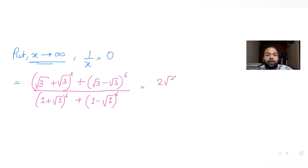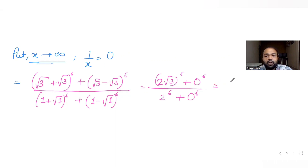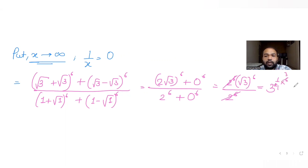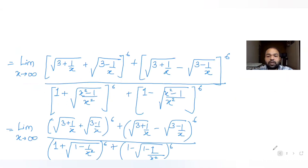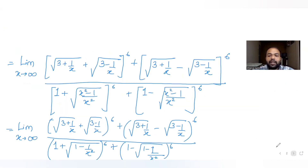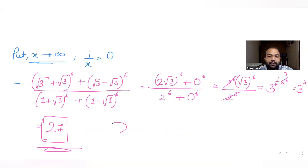Solving this: the numerator becomes (2√3)⁶ + 0, and the denominator becomes (1+1)⁶ + (1−1)⁶, which is 2⁶ + 0 = 2⁶. So we have 2⁶ × (√3)⁶ divided by 2⁶, and the 2⁶ terms cancel. (√3)⁶ = 3³ = 27. So the answer for the limit is 27, which matches the given options.